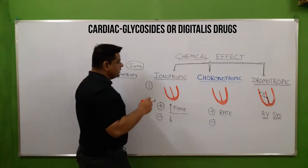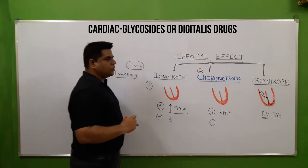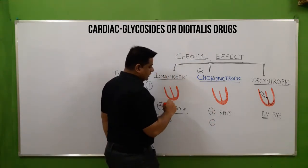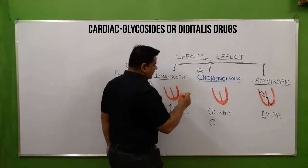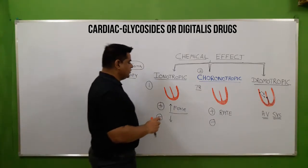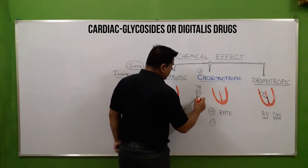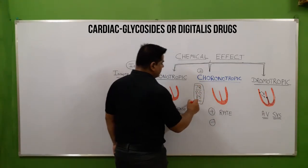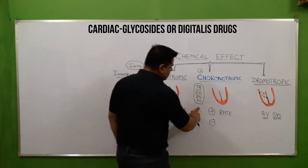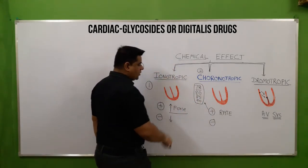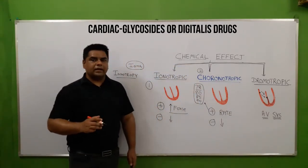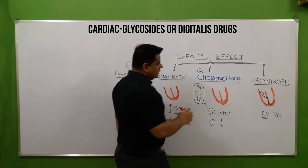The second chemical effect is the chronotropic effect, which deals with the rate of heartbeat. We normally study that the heart beats 72 times per minute. If we increase this rate to 80, 85, or 90 beats per minute, this is called a chronotropic effect. Positive chronotropic means increased rate of heartbeat, and negative chronotropic means decreased rate of heartbeat.